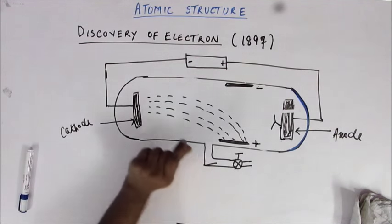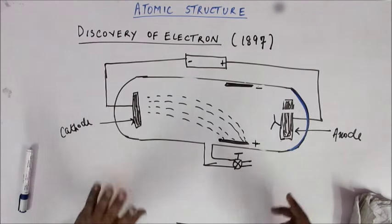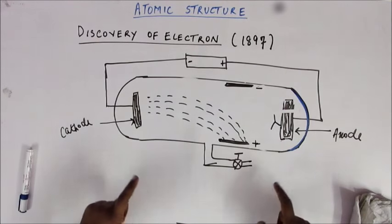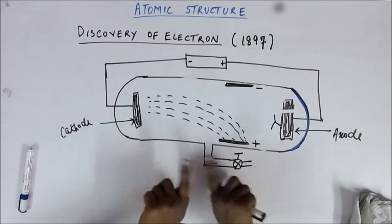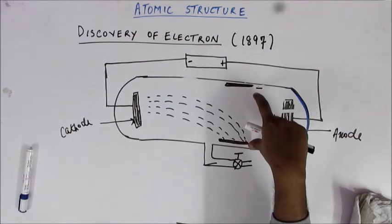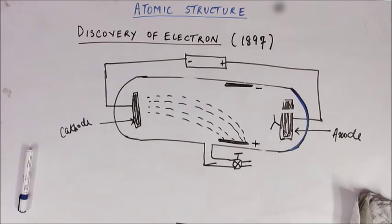Prior to this we had proved that the radiation carries charge, and now this experiment further proved that the nature of that charge is negative. So we also know that the radiation produced by this setup carries negative charge. The obvious natural extension would now be to find out the amount of negative charge present in the radiation.